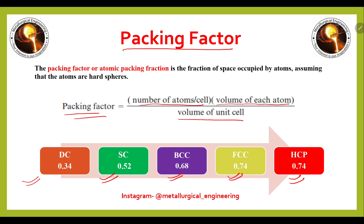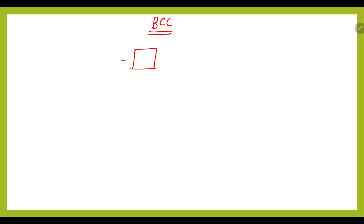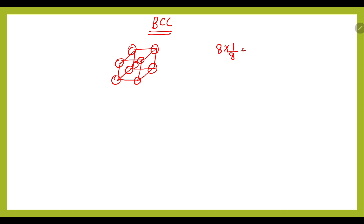Let's take the BCC example. In a BCC unit cell, there are 8 atoms at the corners and one atom at the body center. The effective number of atoms is: 8 atoms at corners, each shared by 1/8, plus 1 atom at the center, giving a total of 2 atoms per unit cell.